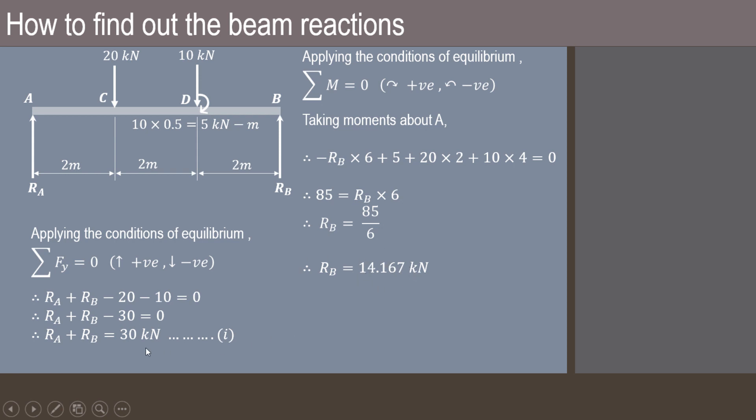Now we can substitute this value of RB in equation 1. So from equation 1 we can say that RA is 30 - RB. Substitute the value of RB, so it is 30 - 14.167. So the value is 15.833 kN.